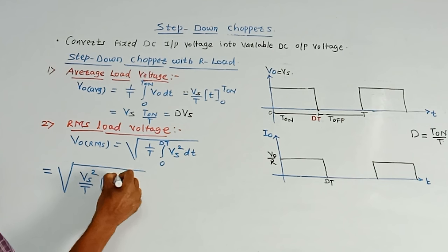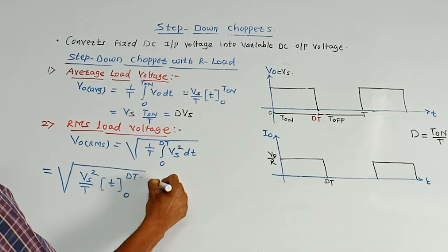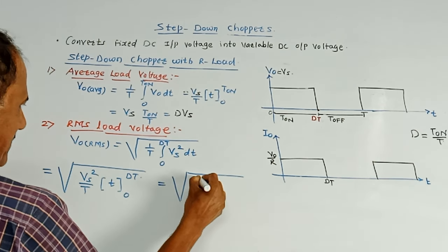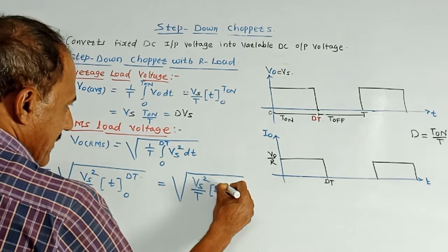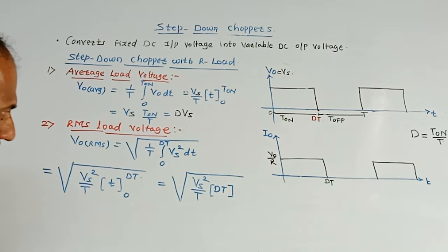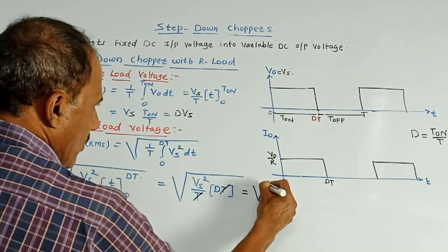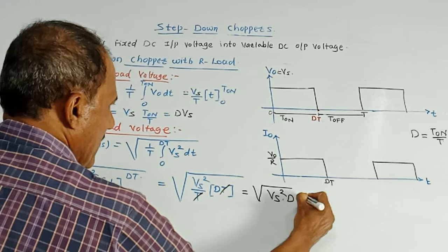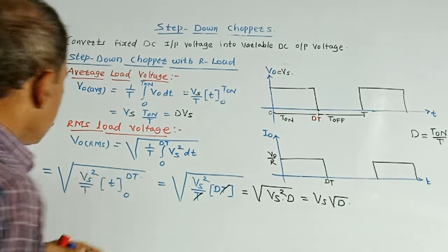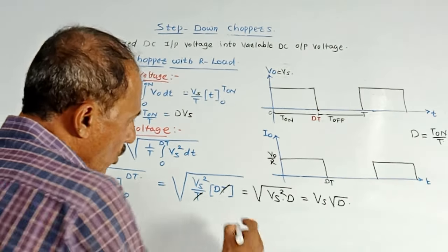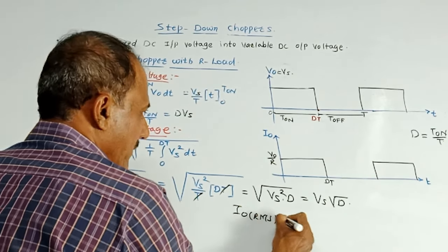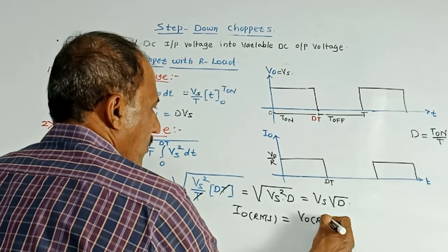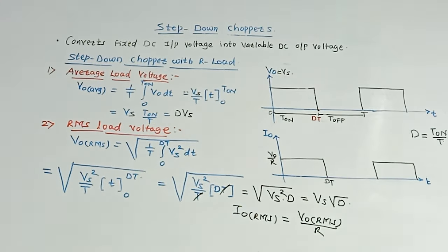Integration of DT is T. So limits are 0 to DT. Well further simplified. This becomes Vs square upon T. Upper limit is DT. DT minus lower limit 0, so it simply becomes DT. This term T gets cancelled. So this can be square root of Vs square into D which is same as Vs root D. This is the value of RMS load voltage. If you want to calculate RMS load current, then it can be denoted as I0 or IL RMS. So we know that simple formula. It is V0 RMS upon resistance R. So that will be Vs upon R into root D. This is the analysis of step down chopper with R load.